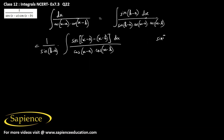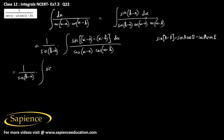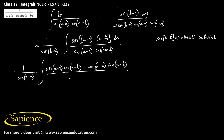Now we know that sin(A minus B) equals sin A cos B minus cos A sin B. So applying this formula here, this will be 1 by sin(b minus a) into the integral of sin(x minus a)cos(x minus b) minus cos(x minus a)sin(x minus b), divided by cos(x minus a) into cos(x minus b), dx.